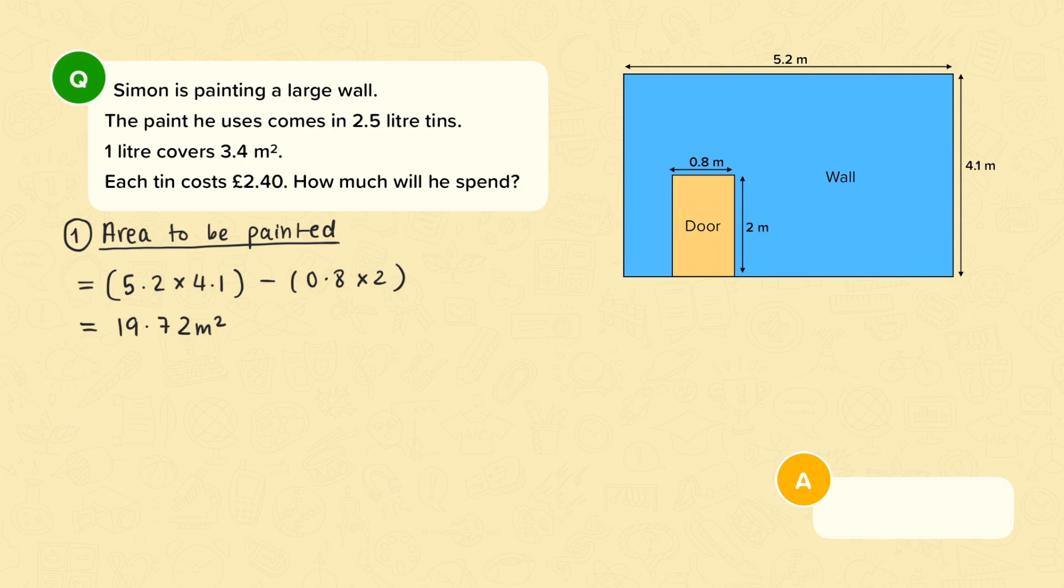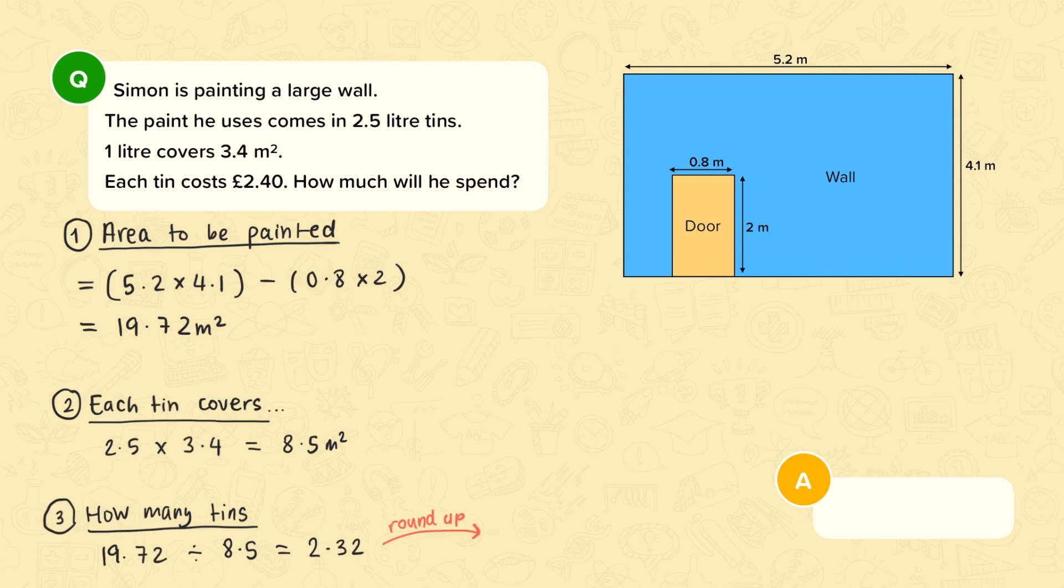And then working out how much area is covered by each tin doing 2.5 times 3.4, which is 8.5 meters squared. And then how many tins will we need by working out 19.72 divided by 8.5 which gives 2.32 and then we rounded that up to three tins.